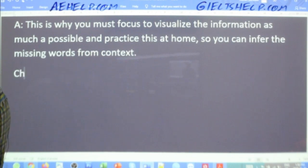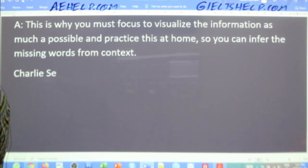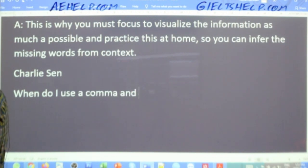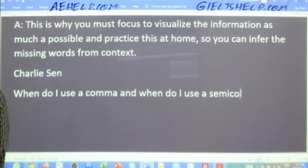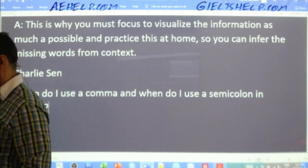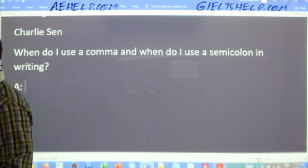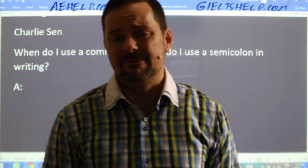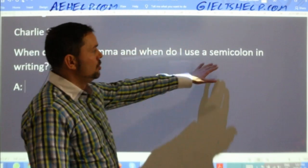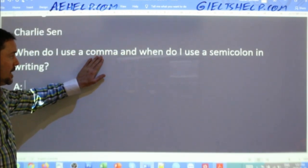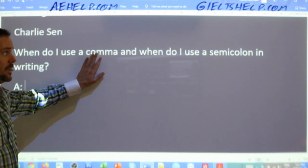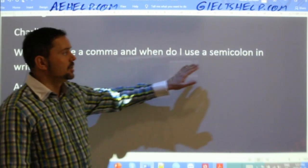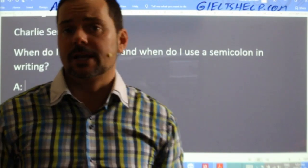Charlie Sen has a big question: when do I use a comma and when do I use a semicolon in writing? Unless you're going for a band 8.5 or a band 9, you don't need to worry about semicolon use. You definitely need to know how to use a comma — commas are much more common in the English language. Semicolons are less common; you only need to worry about that if you're going for a really high band score like 8.5 or 9. For commas, there are basically 12 common comma rules that you should learn, and this is important for a band 7 or even 6.5 or more on the IELTS exam.